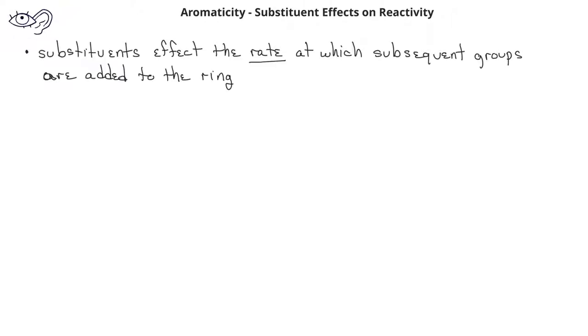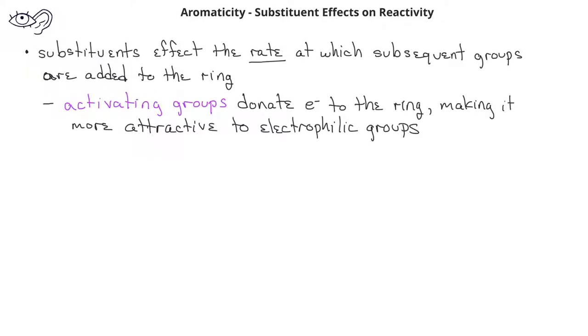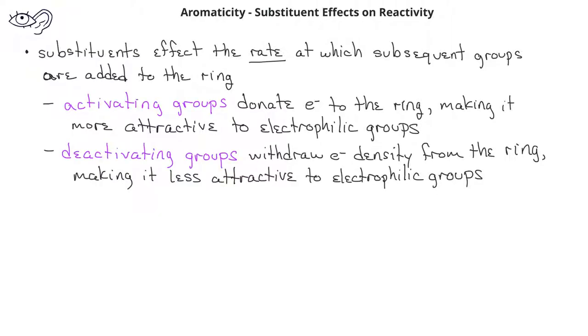The presence of a substituent on a benzene ring can influence what will happen when we try to add a second substituent to the benzene ring. It can do this in two ways. First, the presence of a substituent can affect the rate at which subsequent reactions take place. Substituents that are electron donors to the ring make the ring more reactive to electrophilic aromatic substitution — we call these activating groups. However, substituents that withdraw electrons from the ring make the ring less reactive, and so we call these deactivating groups.